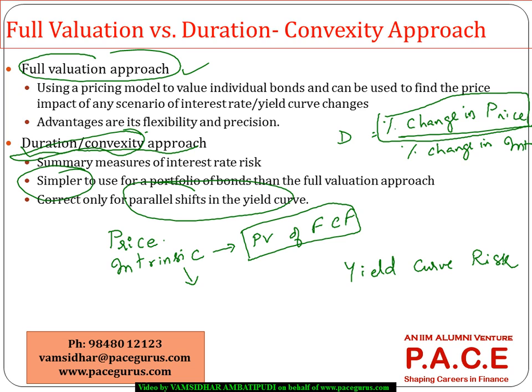If there is yield curve risk, the full valuation approach is much better. For different maturities, you cannot directly use a simple multiplication factor because different terms change at different interest rates. Even for complex instruments like callable bonds, it is not advisable to use one single factor. The full valuation approach is always better, though it takes more time and knowledge, because it accounts for all possible future cash flows.